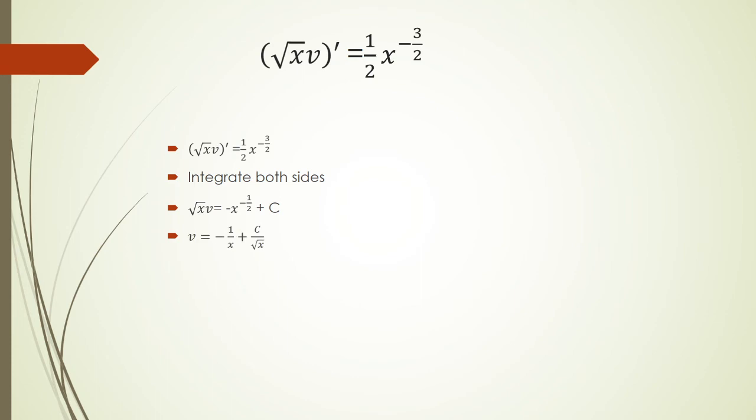We're going to divide both sides by root x. So keep in mind, negative x to the negative 1 half is negative 1 over root x, and then when I divide it by root x, it becomes negative 1 over x.